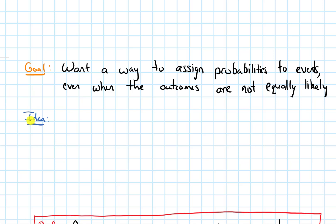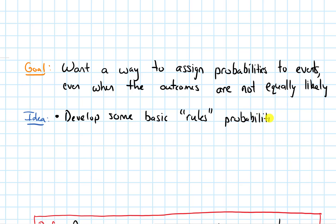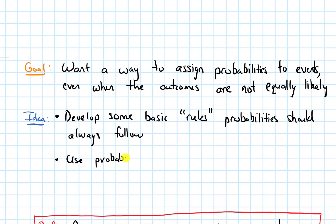So our goal is to find a way to assign probabilities to events even when the outcomes are not equally likely. Our idea is to develop some basic rules that probabilities should always follow, and then use properties that follow from those basic rules to compute probabilities.